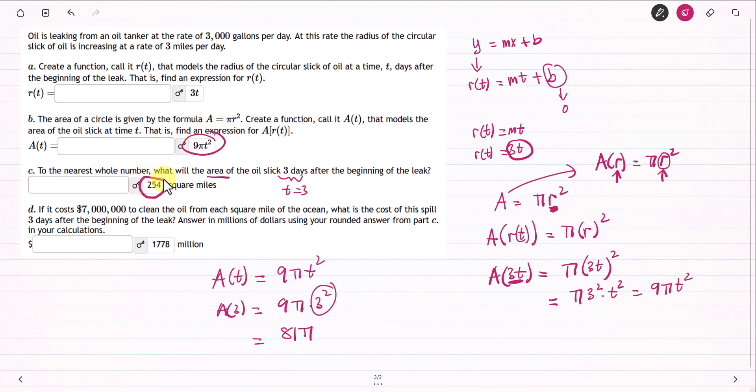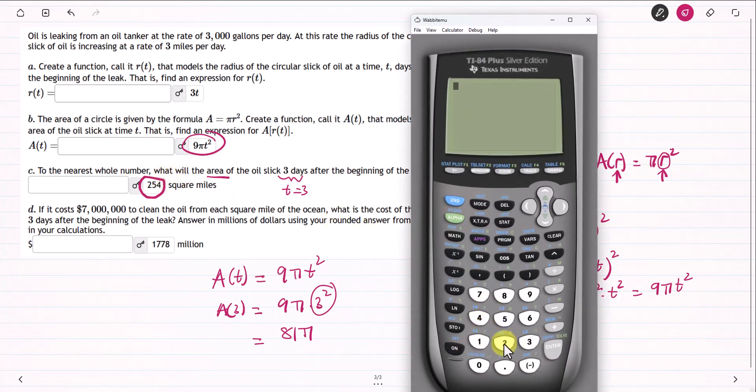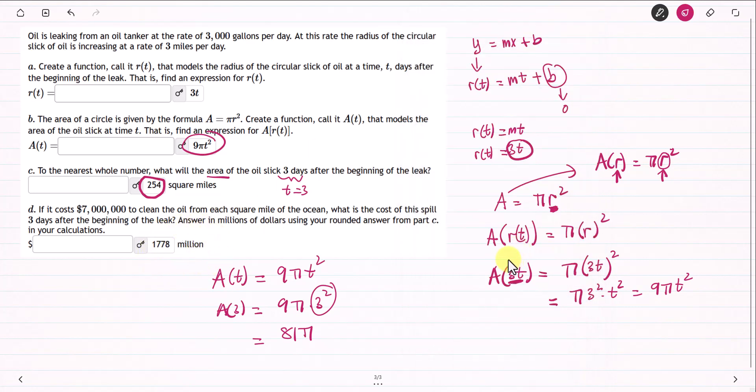Now you know that it is 7 million dollars to clean each square mile. We have 254 square miles. Each of the square miles will cost you 7 million. So 254 multiplied by 7 million dollars for each square gives you 1778 million. The answer is in millions of dollars, so 1778 million. That is how you answer this question.